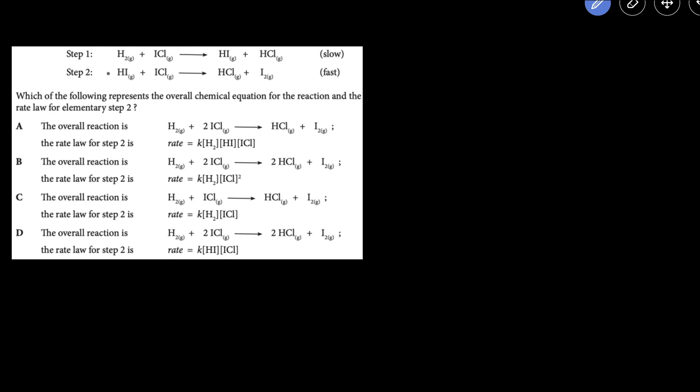So let's start by figuring out the overall chemical reaction. To do that, we just have to add the two reactions together and cancel out the species that are the same on both sides. For example, we can cancel out HI because they're the same on both sides, and also, well actually no, we can't cancel anything else out. So that means that the final reaction is going to be H2 plus 2ICL goes to 2HCL and I2.